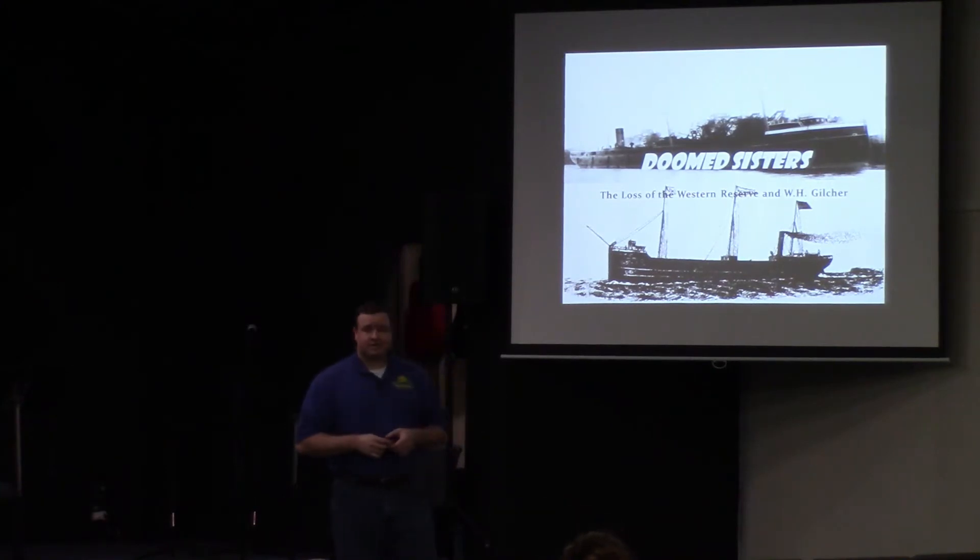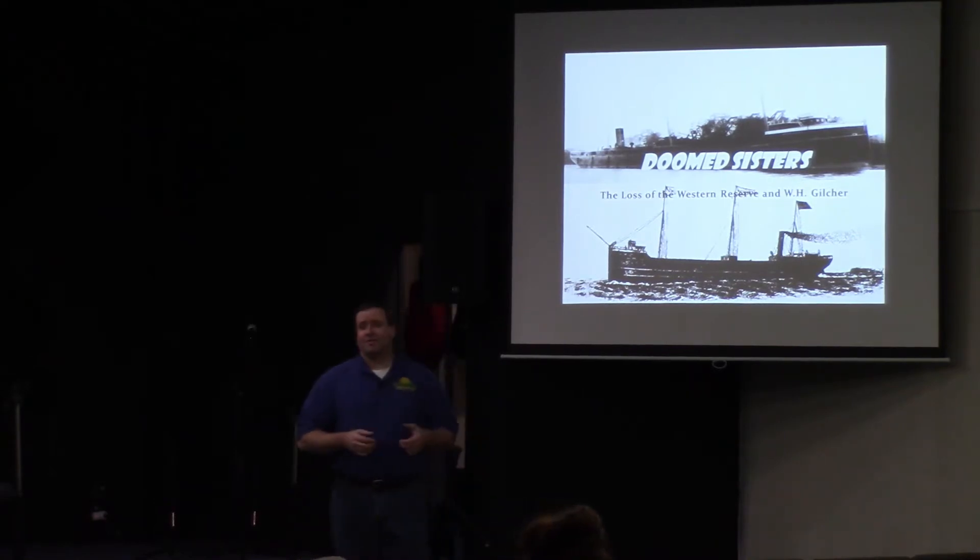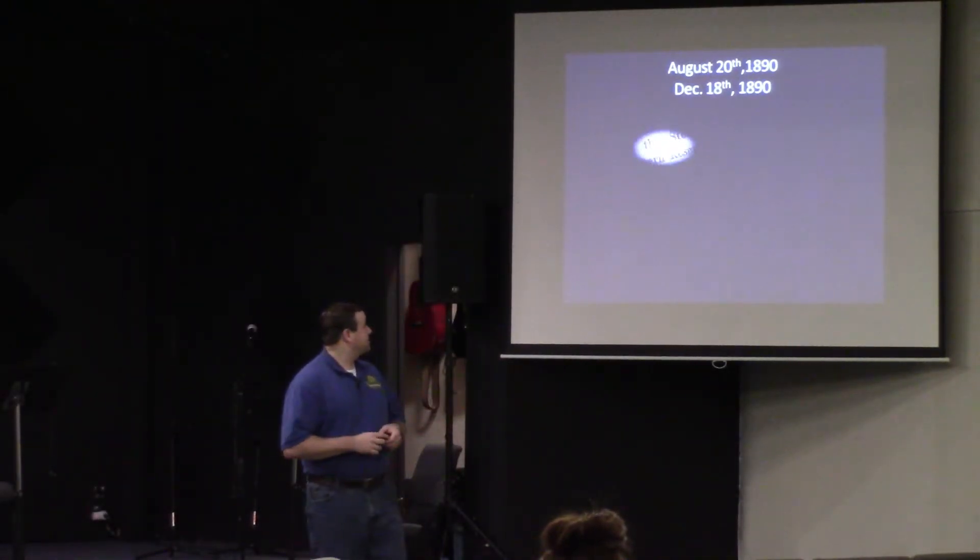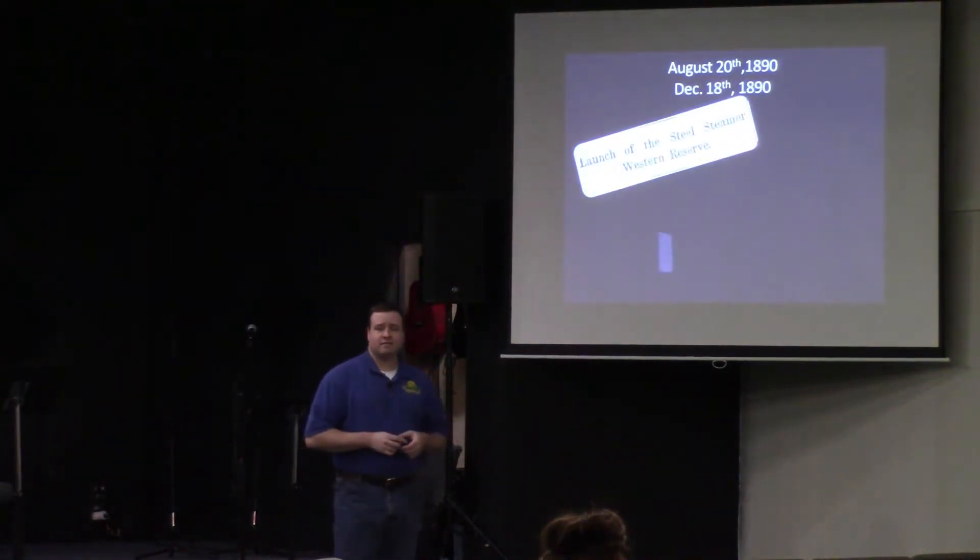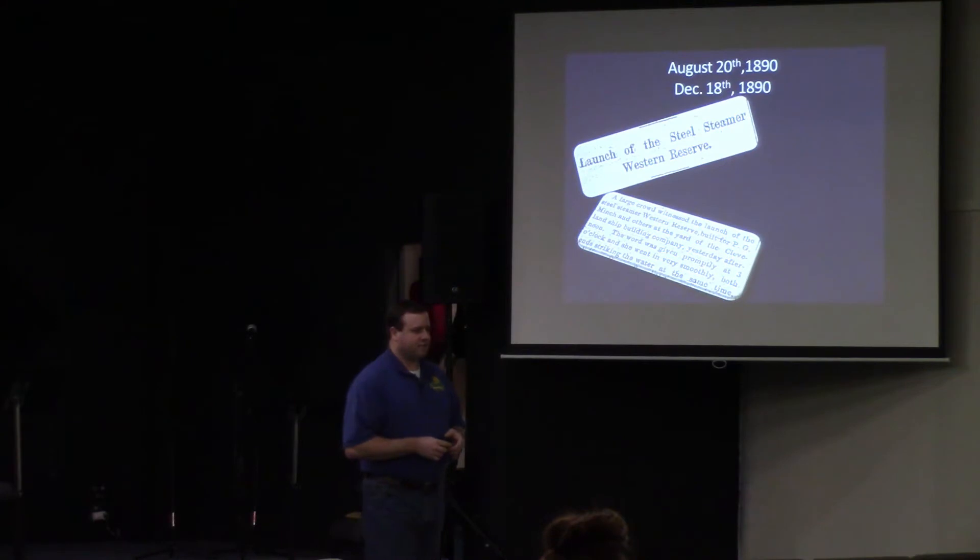The stories are about the Western Reserve and the W.H. Gilcher. This is going to be the earliest story I have told you so far in my adventures of shipwreck storytelling. We're going all the way back to the year 1890 to start. The story really starts on August 20th of 1890 with the launch of the steel steamer, the Western Reserve. She's going to be launched at the shipyard of the Cleveland Shipbuilding Company in Cleveland, Ohio.